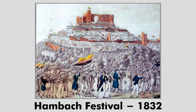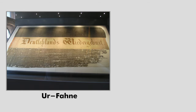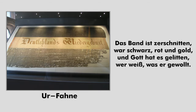In May 1832, around 30,000 people demonstrated at the Hambach Festival for freedom, unity and civil rights. By then, the colors black, red and gold had become a well-established symbol for the liberal, democratic and republican movement within the German states. During the Hambach Festival, people sang the song 'Wir hatten gebaut ein stattliches Haus.' You can find the colors included in the song — Schwarz, Rot und Gold — which means black, red and gold.